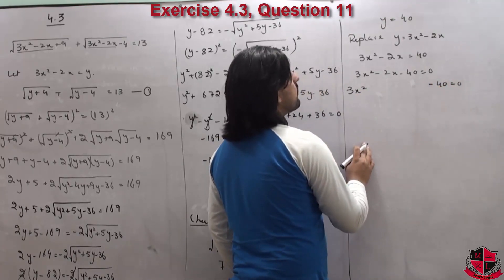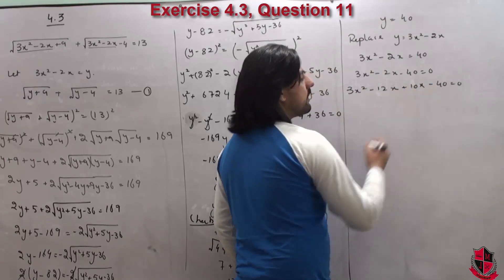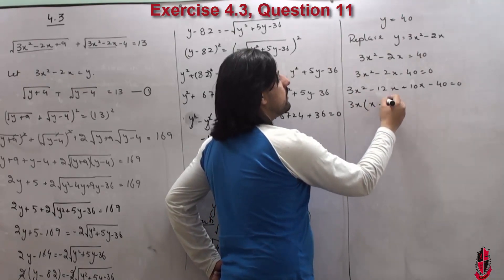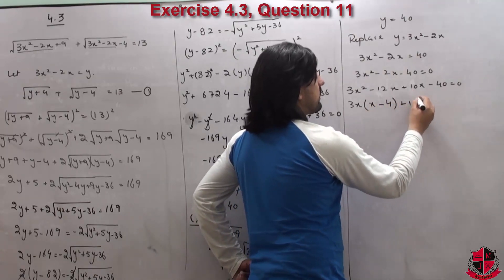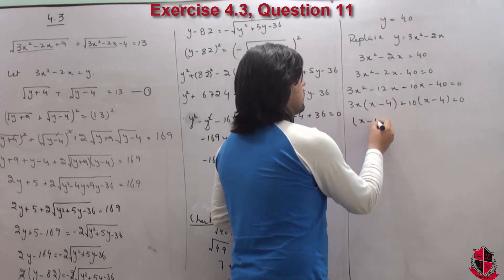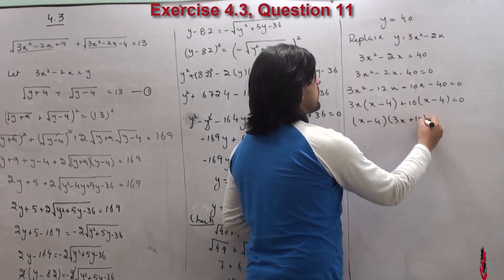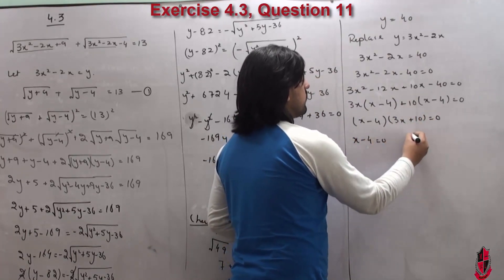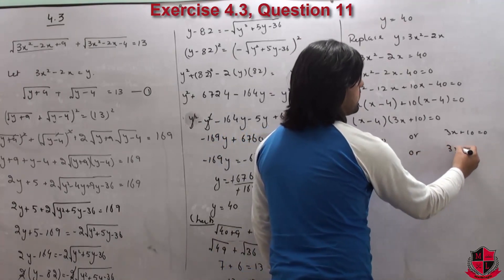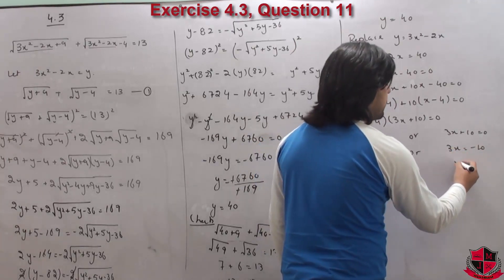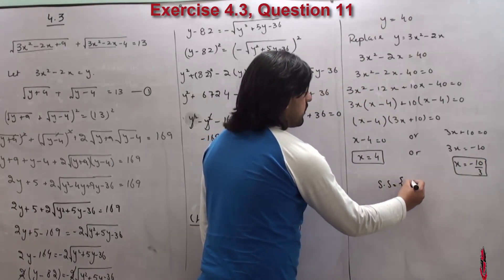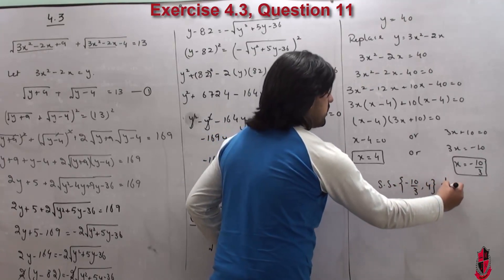Factorizing 3x²-2x-40 = 0: factors are -12x and +10x. Taking 3x common from first two terms: 3x(x-4), and 10 common from last two: +10(x-4). So (x-4)(3x+10) = 0. Equating each: x = 4 or 3x = -10 → x = -10/3. Your solution set is {-10/3, 4}.